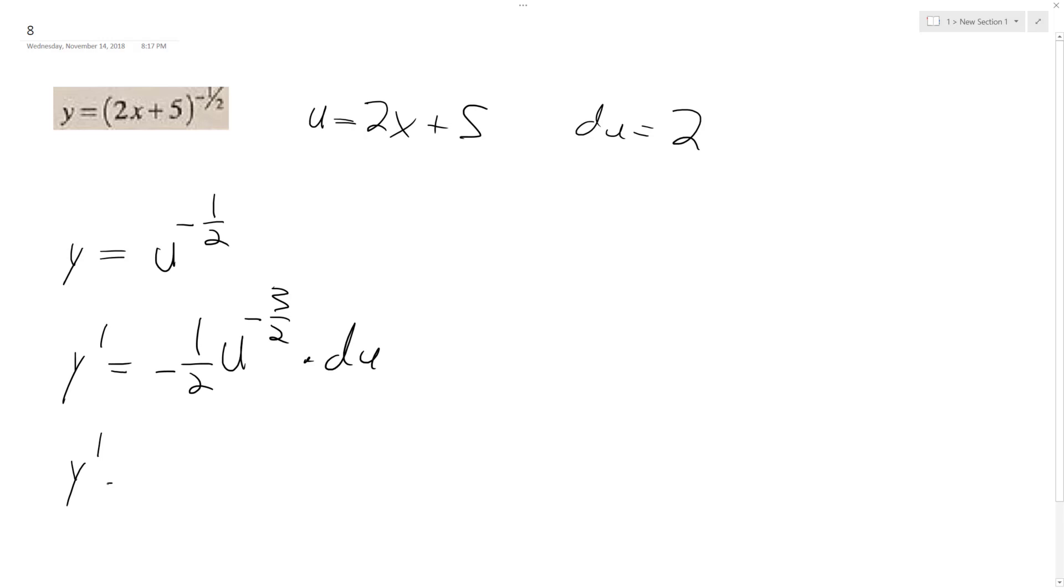So y prime is going to be, substituting back in, negative 1 half times 2x plus 5 raised to the negative 3 halves times 2.